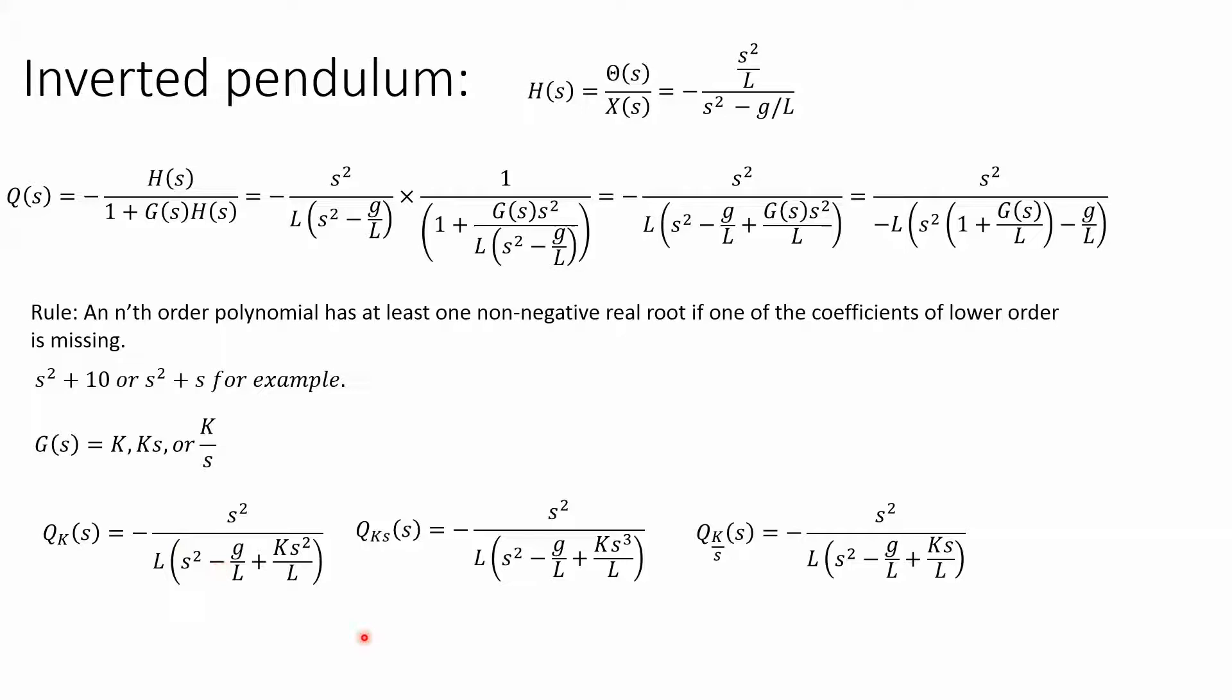What about proportional times derivative? We substitute G(s) for Ks and we get (K/L) times s³. So I have an s³ term, an s² term. Still, the s term is missing and then we have our constant term. So this can't be made stable.